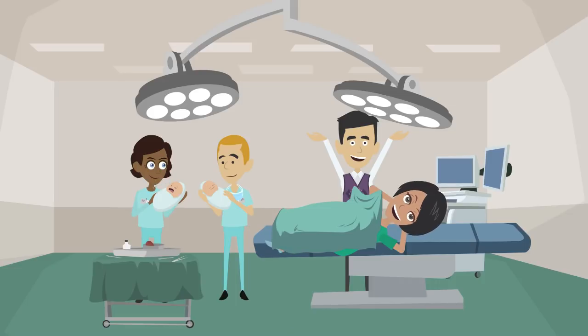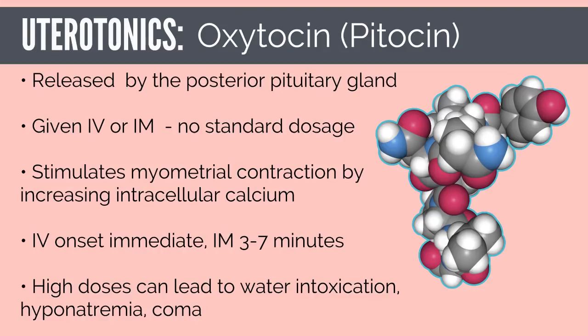Thankfully, although Ms. GB had many risk factors such as uterine overdistension with twins, myometrial exhaustion from prolonged labor, and chorioamnionitis, there are many medications and procedures to help stop her bleeding. Oxytocin, or Pitocin, is used for both prevention and treatment of postpartum hemorrhage. It is a nonapeptide produced in the paraventricular nucleus of the hypothalamus and released by the posterior pituitary gland. It can be given intravenously or intramuscularly; however, despite being a first-line therapy, there is no standardized rate or optimal dose.